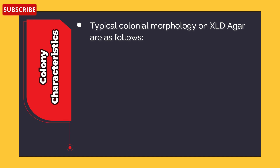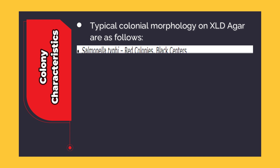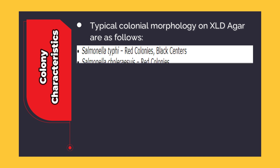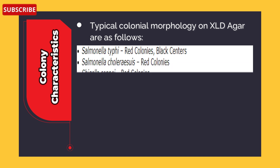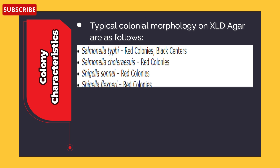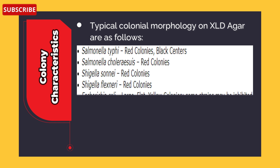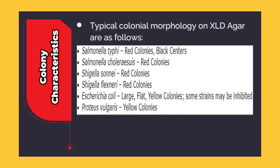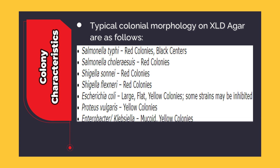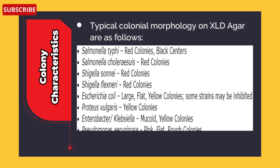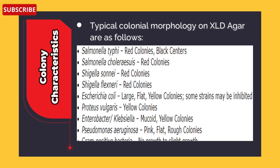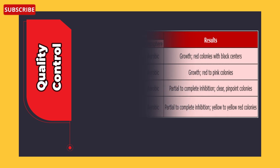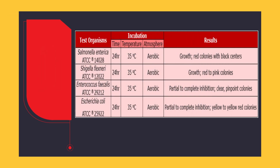Typical colony morphology on XLD agar: Salmonella Typhi — red colonies with black centers; Salmonella Choleraesuis — red colonies; Shigella sonnei — red colonies; Shigella flexneri — red colonies; E. coli — large flat yellow colonies (some strains may be inhibited); Proteus vulgaris — yellow colonies; Enterobacter/Klebsiella — mucoid yellow colonies; Pseudomonas aeruginosa — pink flat rough colonies; Gram-positive bacteria — no growth to slight growth.